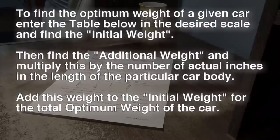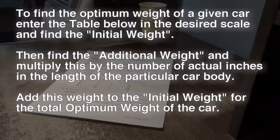The next statement explains how to find the optimal weight of a given car: enter the table in the desired scale and find the initial weight. Then find the additional weight and multiply this by the number of actual inches in the length of the particular car body. Add this weight to the initial weight for the total optimal weight of the car. That might sound like a basic word problem from junior high but it's a key component to understanding the table below.